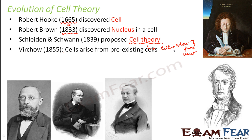Some time later there was another scientist called Virchow. Around 1855 he added to the cell theory, modifying it by saying that cells arise from pre-existing cells. Until Virchow, scientists did not know how new cells are formed. Virchow explained that whatever cells already exist, they only give rise to new cells through the process of cell division. We will talk about cell division in one of our later chapters, where we will see how cells actually arise from pre-existing cells.